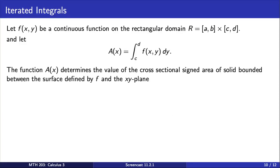Note that the function A determines the value of the cross-sectional signed area in the y direction for fixed values of x. This area comes from the solid bounded between the surface defined by f and the xy plane over the rectangle R.